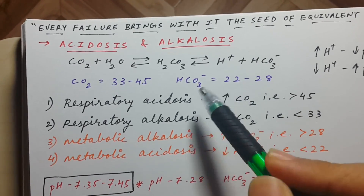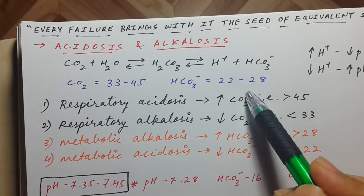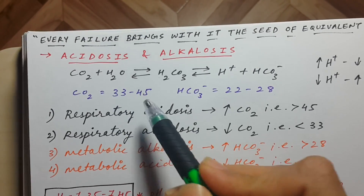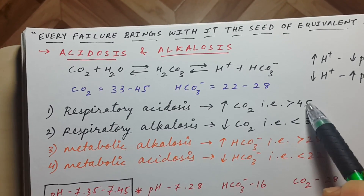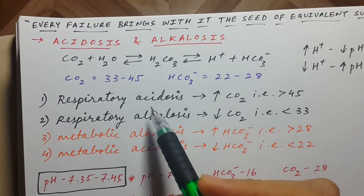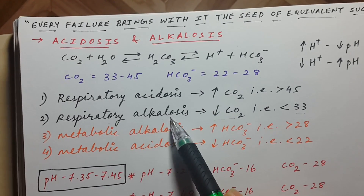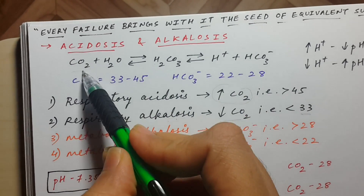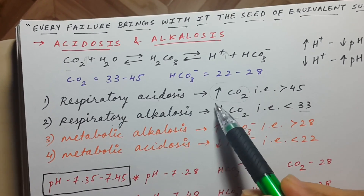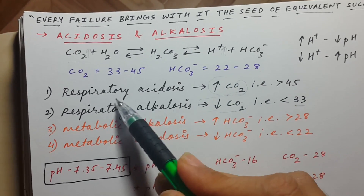There are two types: respiratory acidosis and respiratory alkalosis. Respiratory acidosis occurs due to an increase in CO2 — if the CO2 level is more than 45, it leads to respiratory acidosis. If CO2 is less than 33, it leads to respiratory alkalosis. When CO2 increases, H+ increases causing acidosis; when CO2 decreases, H+ decreases causing alkalosis.